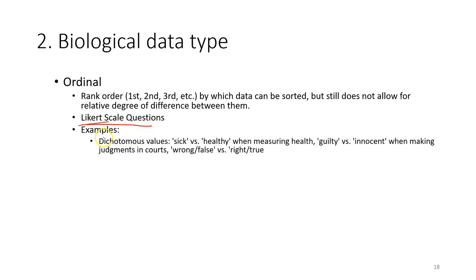The ordinal data can be dichotomous values: sick or healthy when measuring health, guilty or innocent when making the judgment in court, wrong or false, right or true. These are the dichotomous values—you have two values. We also have a spectrum of values, for example if you ask a student.